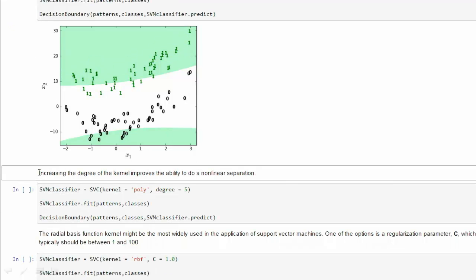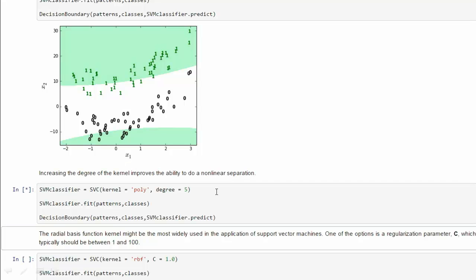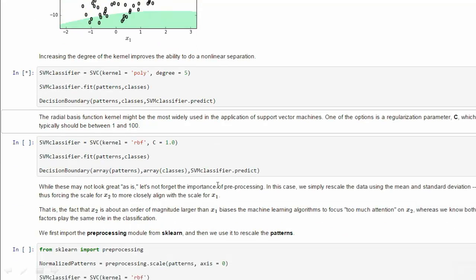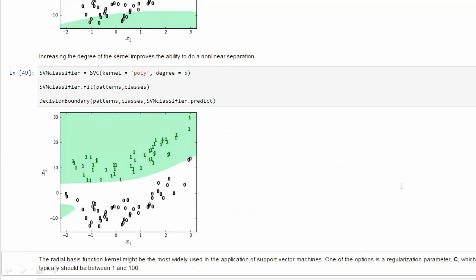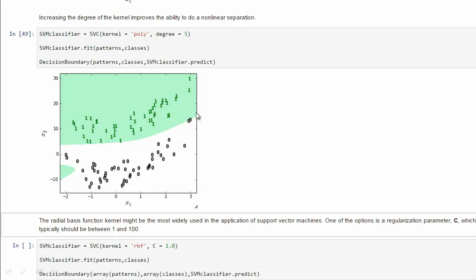The choice of kernel is extremely important. Maybe a kernel 2 is too small. So, you can see what happens with a degree of 5. Well, that's a little better. At least it separates them, but it's probably not what we would think would be most natural.